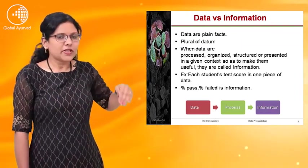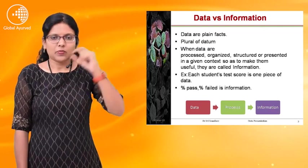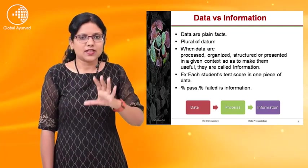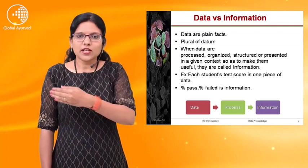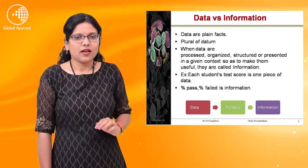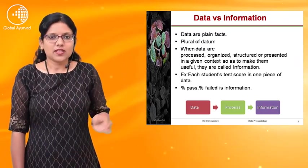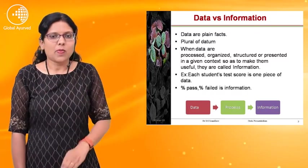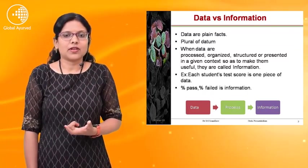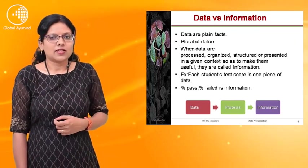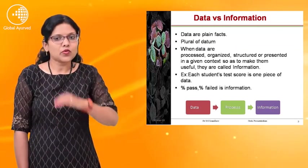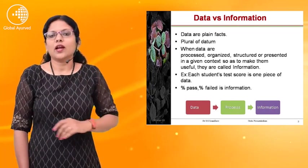For example, the score of each student is one piece of data. In a class of 30 students, the score of each student is called a single data point. And when we process it, we convert it into pass or fail. Such a specific conversion is called information. We can convert data through a procedure into information.